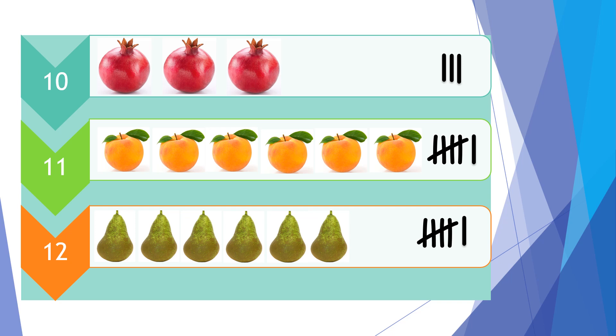Yep, you should have 3 pomegranates, 6 peaches, and 6 pears.